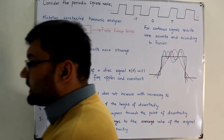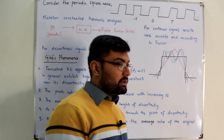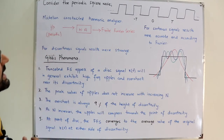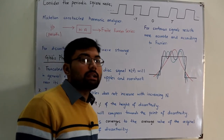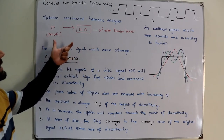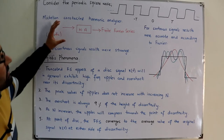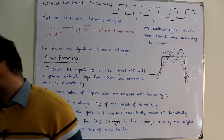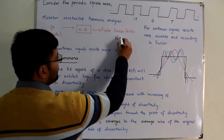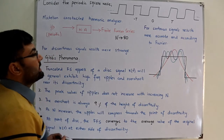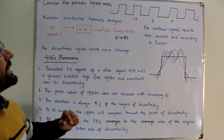Other scientists would not agree because of the discontinuous nature of the signal. They believed Fourier series would only exist for continuous signals, not discontinuous ones. We start the discussion with a scientist named Michelson, who constructed a device called a harmonic analyzer. It would give you a finite Fourier series representation of any periodic signal applied to it, with n ranging up to a maximum of 80.